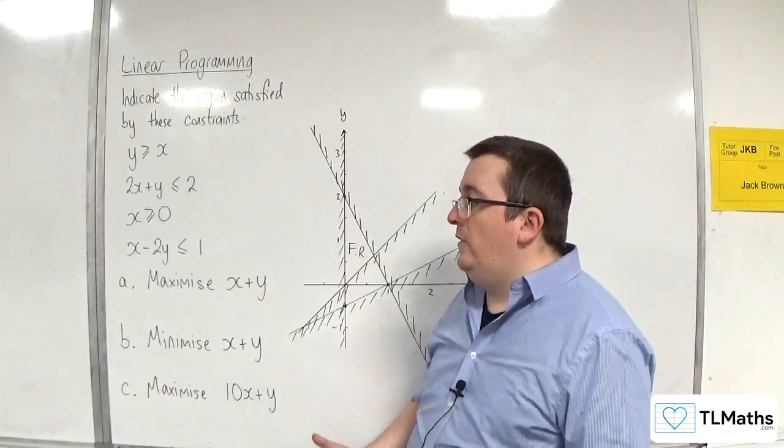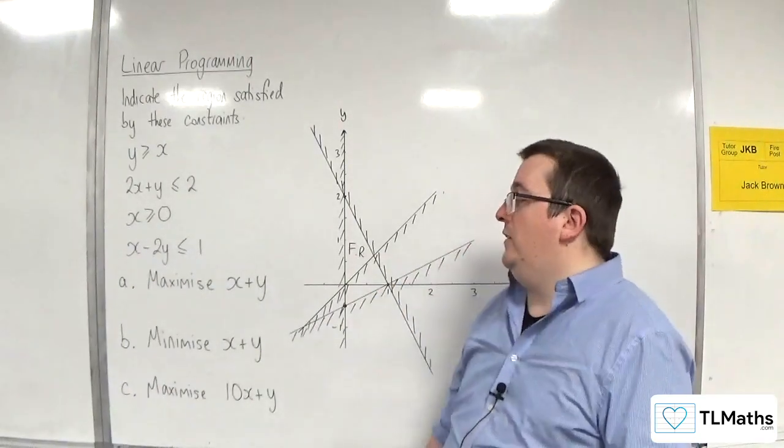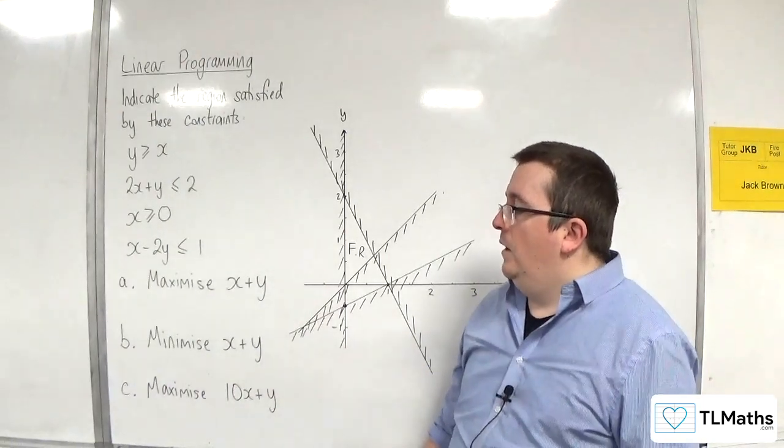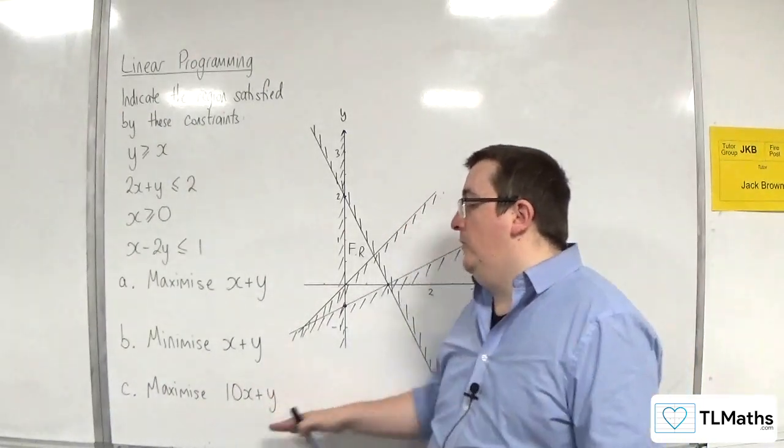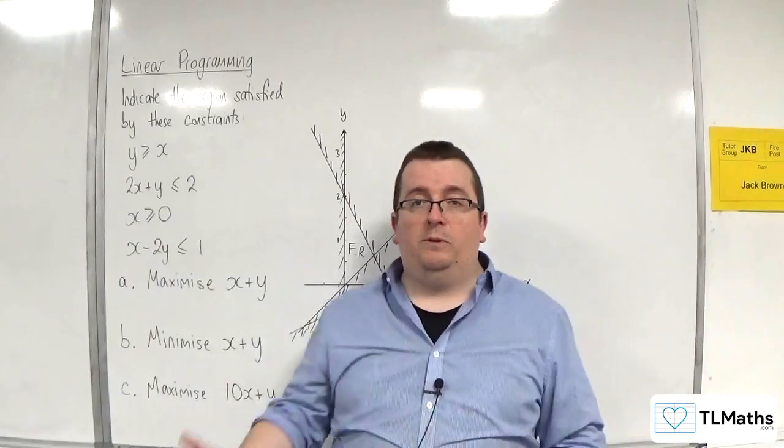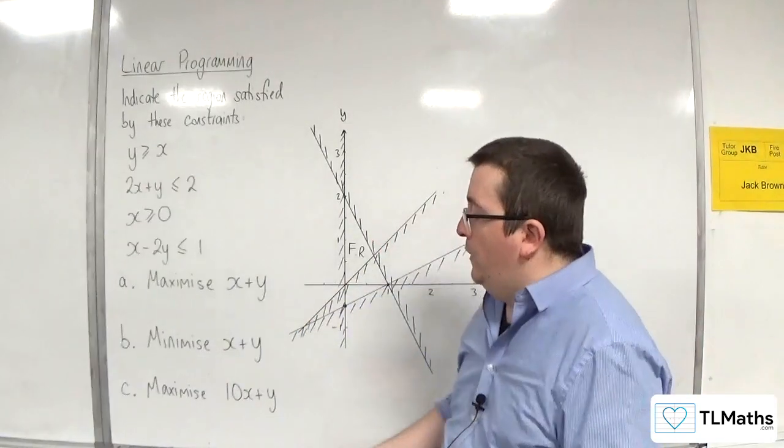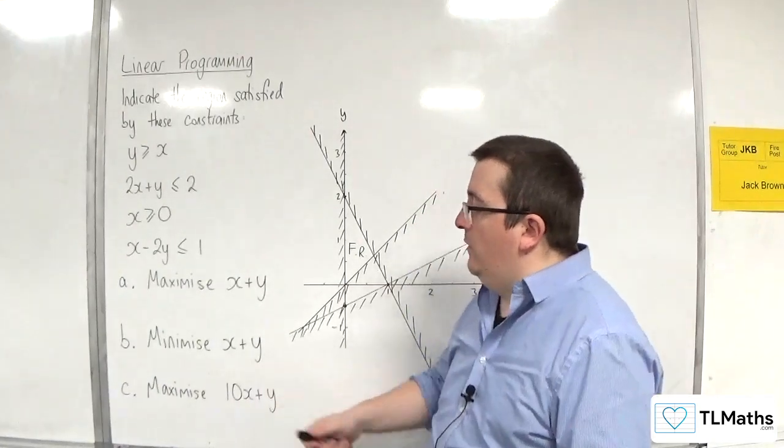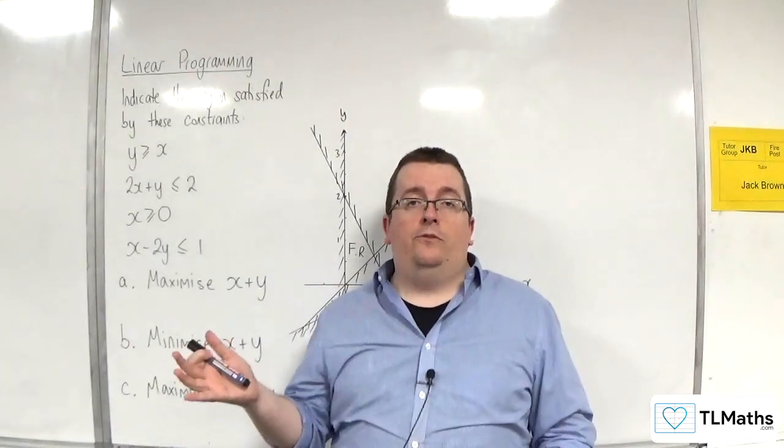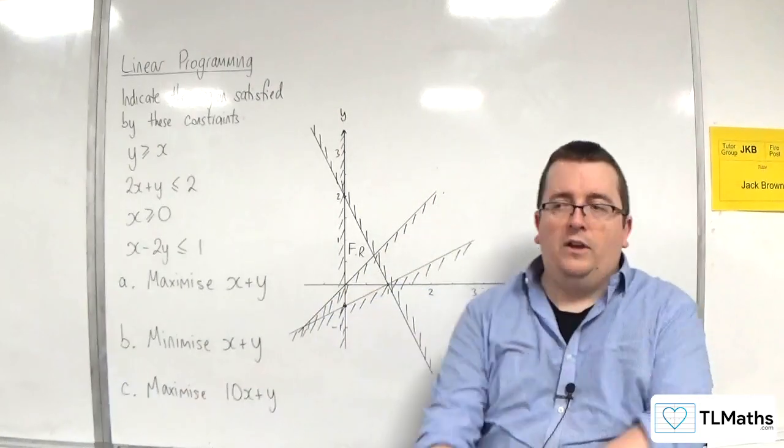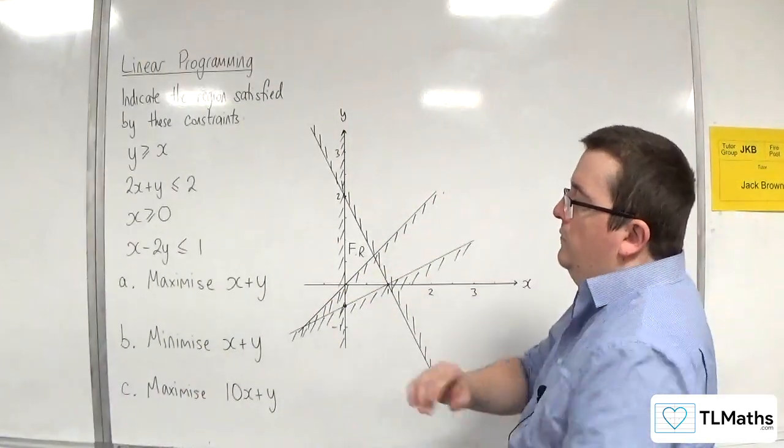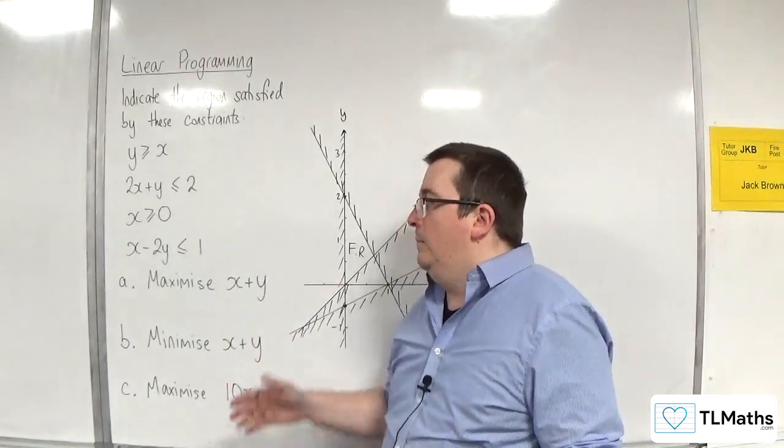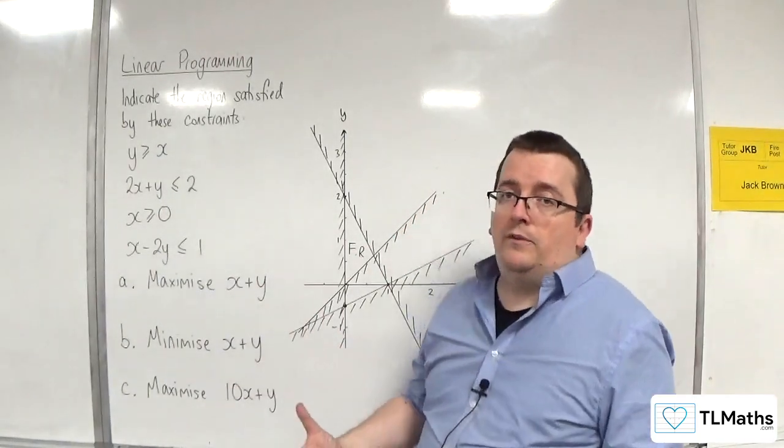For other reasons, because it might be to do with materials, for example, you might want to minimize X plus Y. Or the objective function might be something completely different. Maximize 10X plus Y. Maybe the profit that I make on chairs is 10 times the amount of profit I make on tables, for example. So, you could have all sorts of different objective functions that look like this. But you'll either maximize them or minimize them.